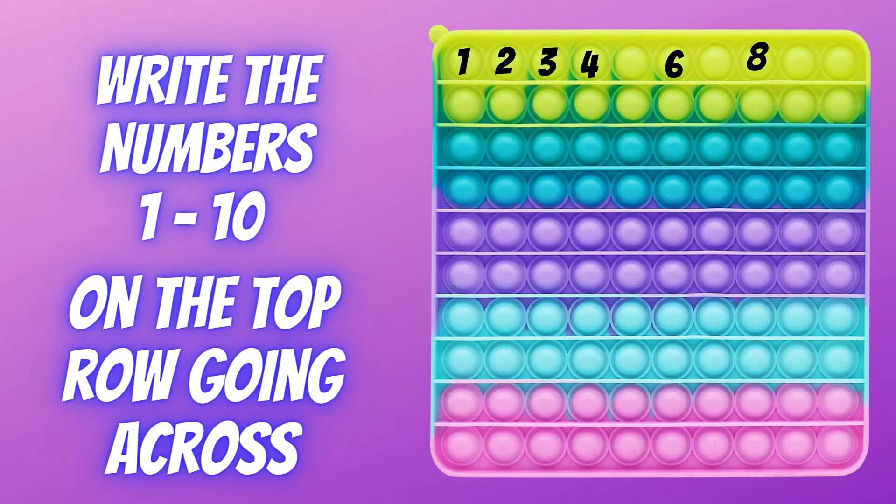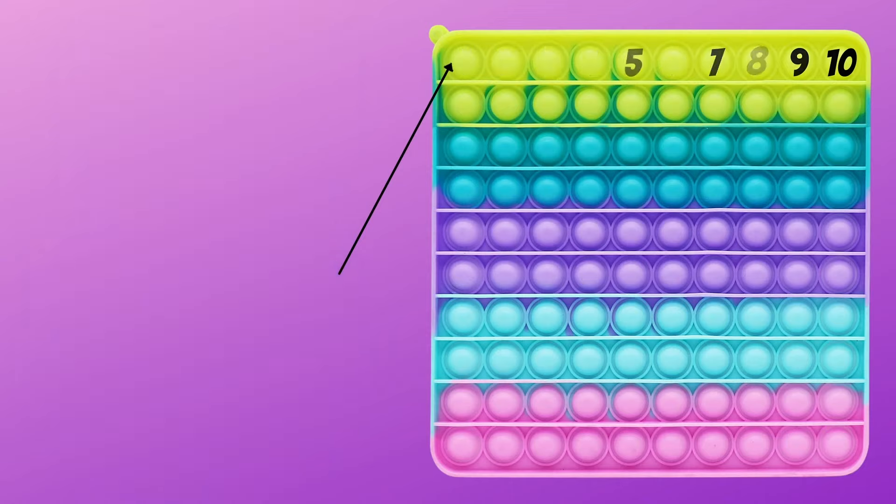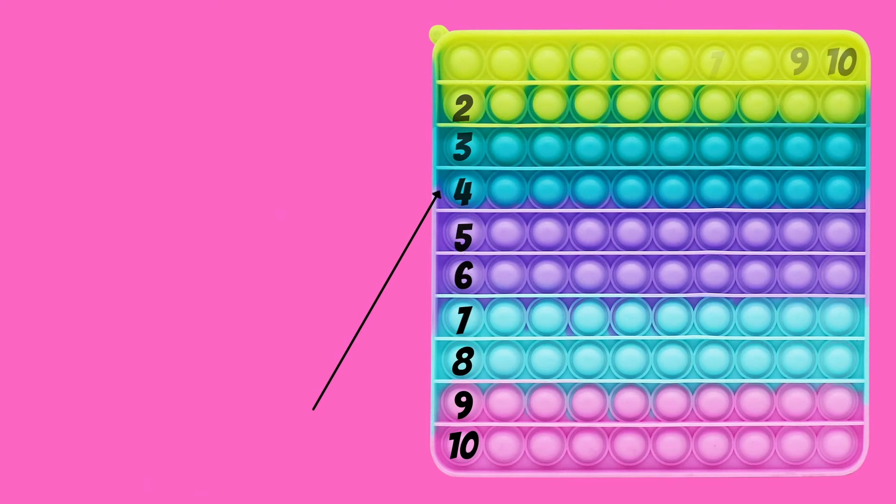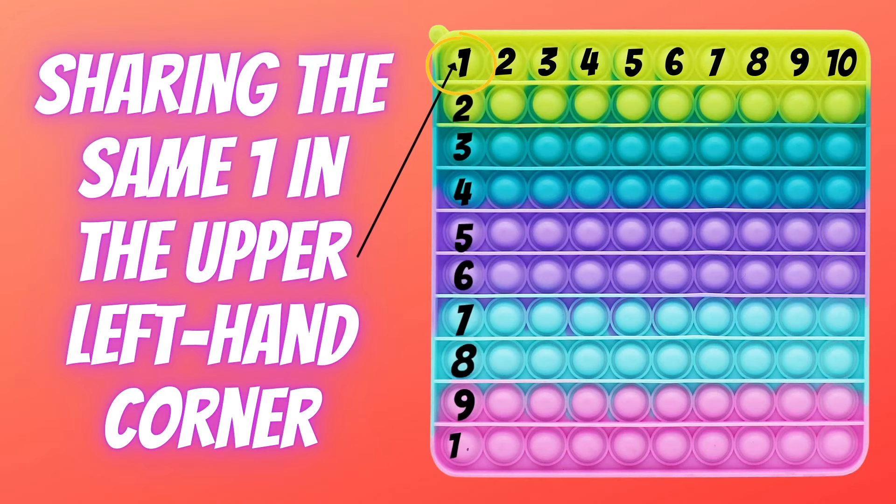First, write the numbers 1-10 on the top row going across. Then, number the first column 1-10 going down, sharing the same one in the upper left-hand corner.